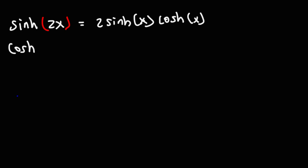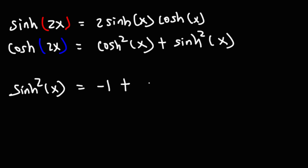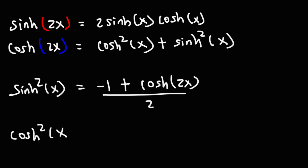For hyperbolic cosine of 2x, it equals hyperbolic cosine squared of x plus hyperbolic sine squared of x. Next we have the power reducing formulas: hyperbolic sine squared equals negative 1 plus hyperbolic cosine of 2x, all over 2. And hyperbolic cosine squared equals 1 plus hyperbolic cosine of 2x, all over 2.